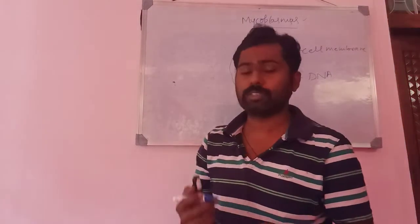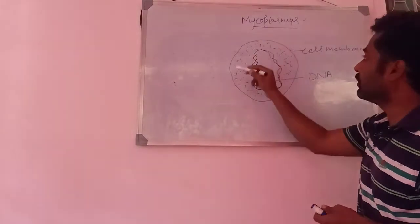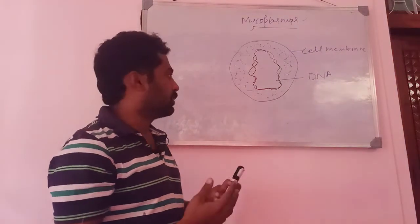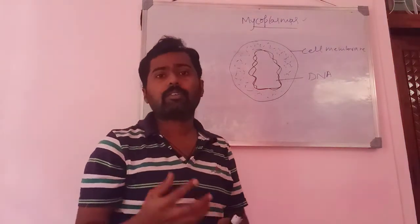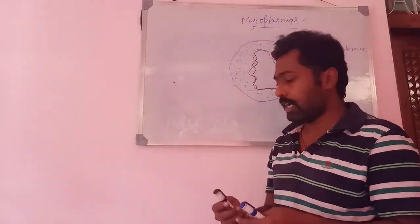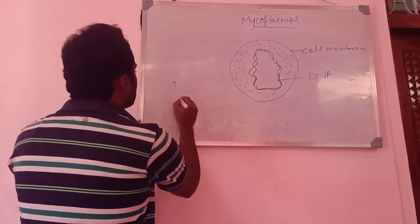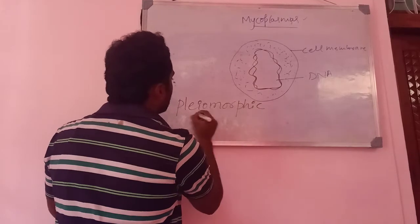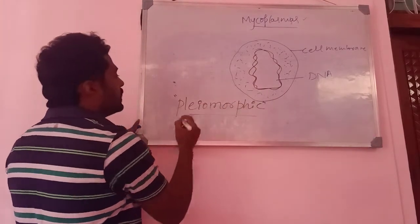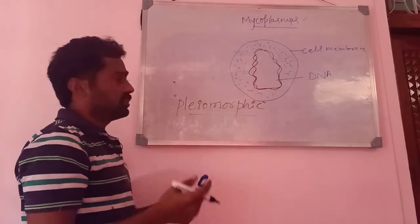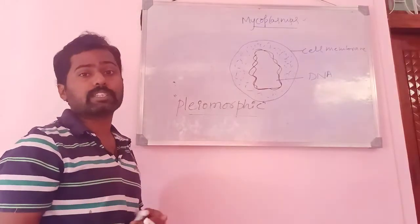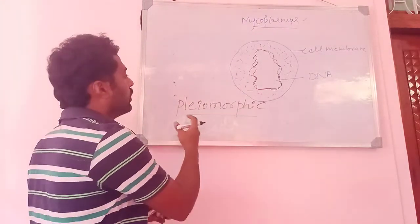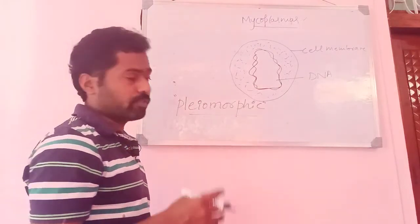Since mycoplasmas lack a cell wall, they can occur in various shapes — spherical, cubicle, rod-like, or any other form. This is why mycoplasmas are regarded as pleomorphic in nature. Pleomorphic means occurring in various shapes. This is an examination question: why are mycoplasmas pleomorphic? Because they lack a cell wall, they can occur in any shape.